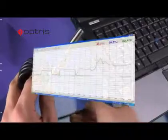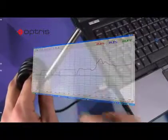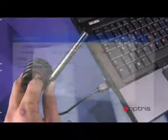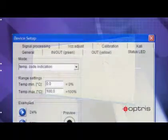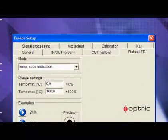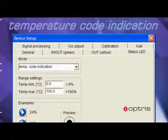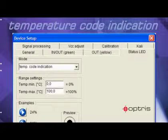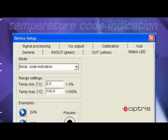But you still can obtain target temperature information by using the TEM code feature. In the software setup screen, you can adjust the indication range between 0 and 100%. If you select 0 to 100 degrees Celsius, the temperature code will show you temperature values.